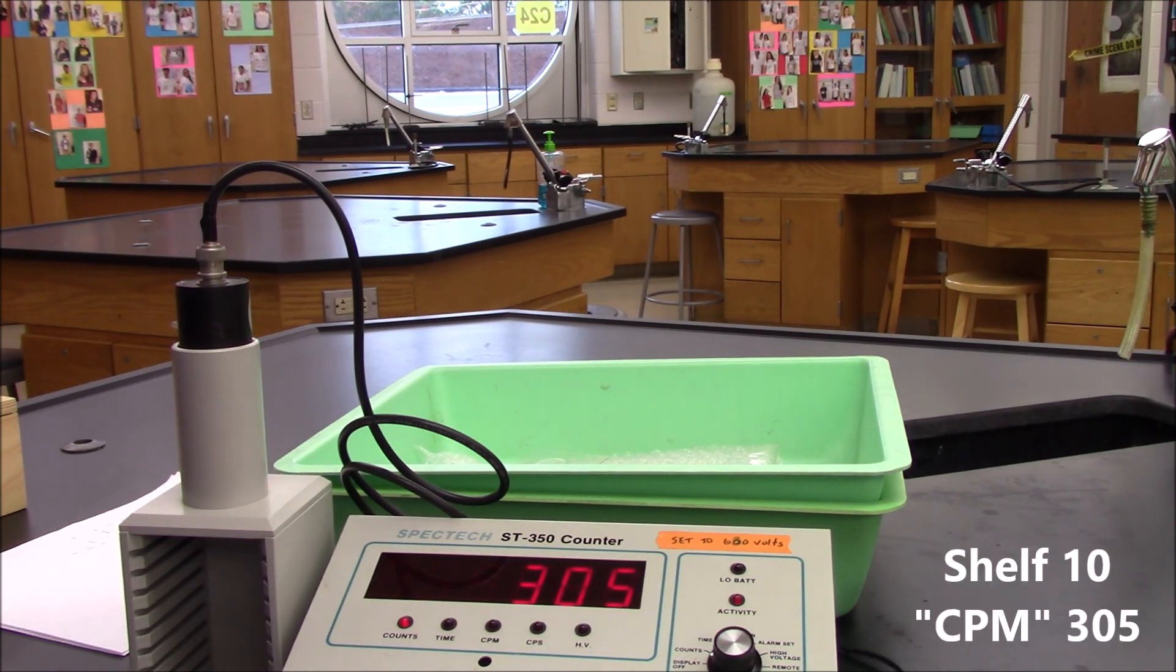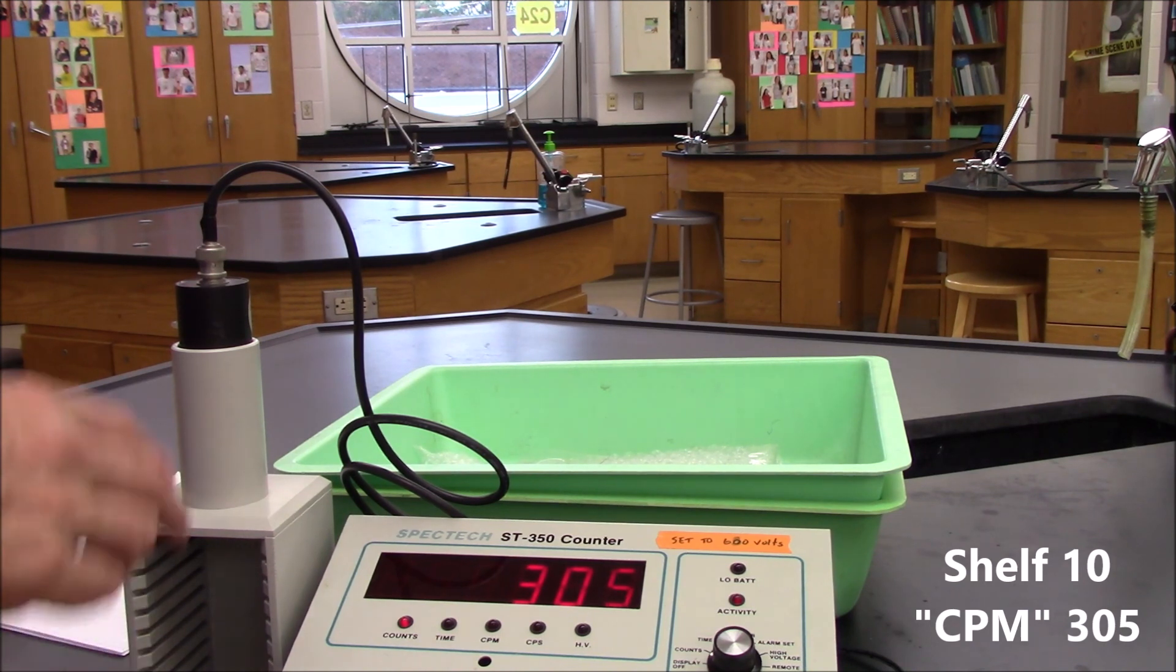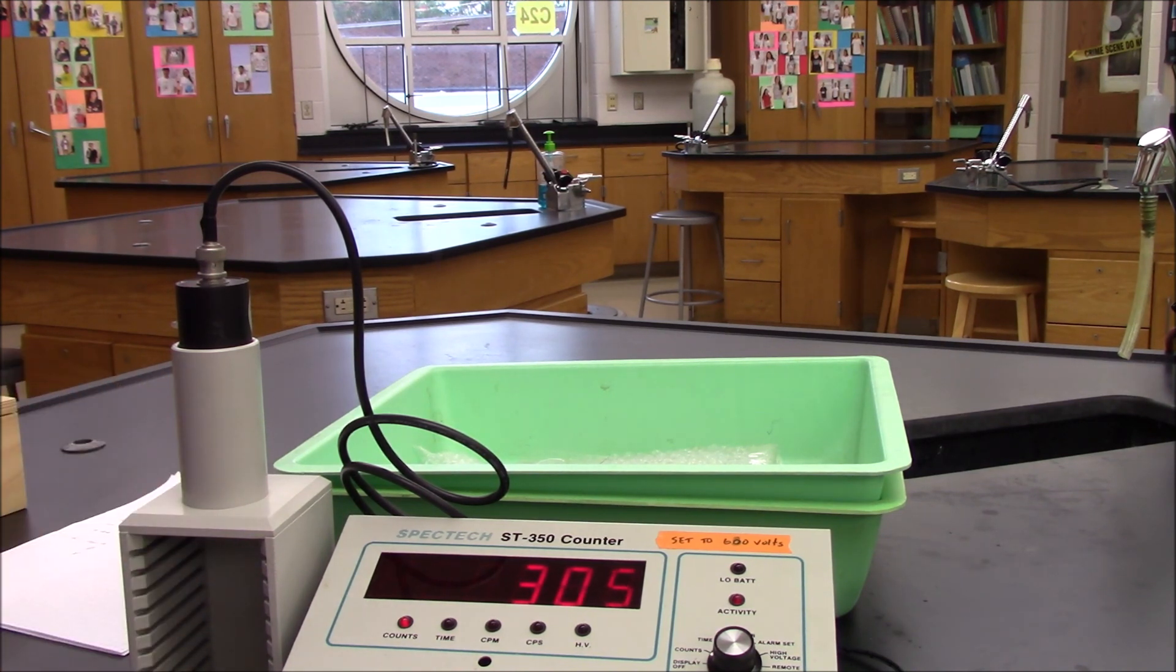So that wraps up the lab. We've looked at alpha, beta, gamma, penetrating power, what blocks them, and distance. And then your lab handout will have a place for you to record your data, do some calculations, and you'll turn the last section into a little graph. Thank you.